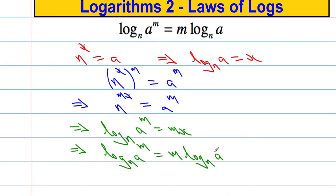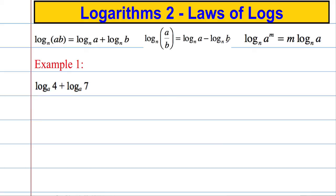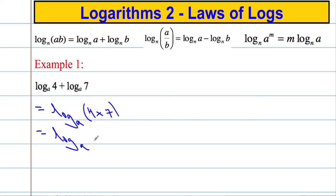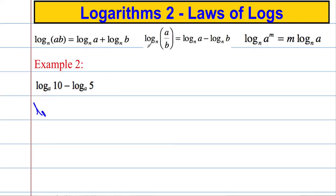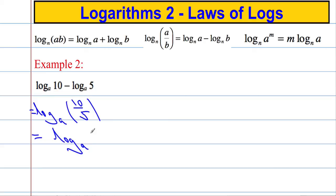Now let's see how we put them into practice — all of these problems we're going to do without a calculator. I've written the rules up here for visual reference. First: log to the base A of 4 plus log to the base A of 7. Adding logs means we use the product rule, so that equals log to the base A of 4 times 7, which is log to the base A of 28. Next: log to the base A of 10 minus log to the base A of 5 equals log to the base A of 10 divided by 5, which is 2.